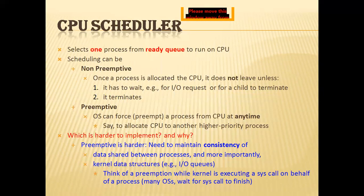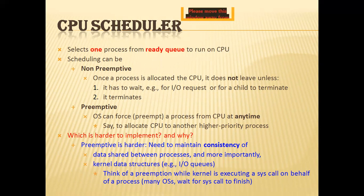CPU scheduling is done by the scheduler — that is the main operation; the main control by the operating system is on the scheduler. Whenever the CPU becomes idle, the operating system must select one of the processes in the ready queue to be executed. The selection process is carried out by the scheduler, which selects a process from memory that is ready to execute and allocates the CPU to that process.